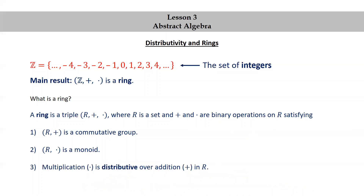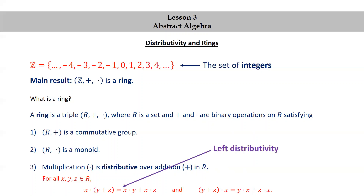The third property is that multiplication is distributive over addition in R. This means that for all x, y, z in R: x × (y + z) = x × y + x × z (left distributivity), and (y + z) × x = y × x + z × x (right distributivity).